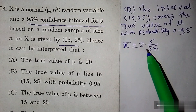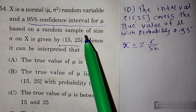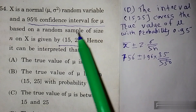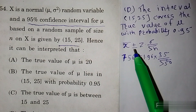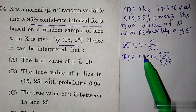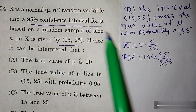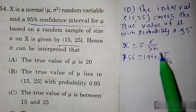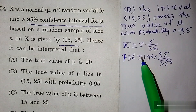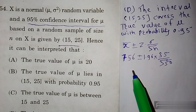हमें जो formula दिया हुआ है उसके use के लिए information दी हुई नहीं है, तो हम एक example लेते हैं। जैसे कि sample mean 756 है, plus minus Z value 95% confidence interval के लिए 1.96, standard deviation 35, और n की value 50 लेते हैं और इसे solve करते हैं।